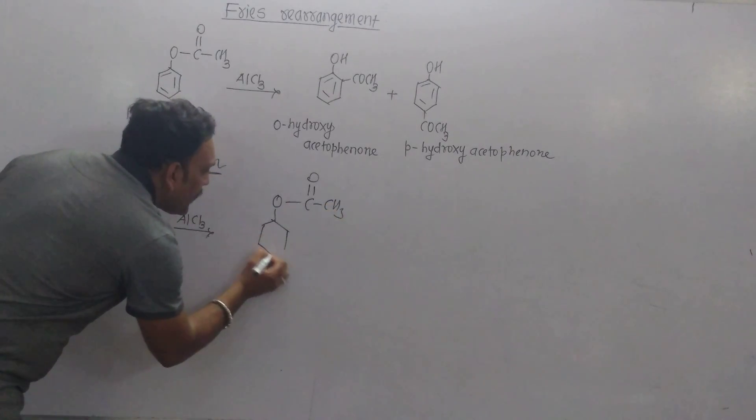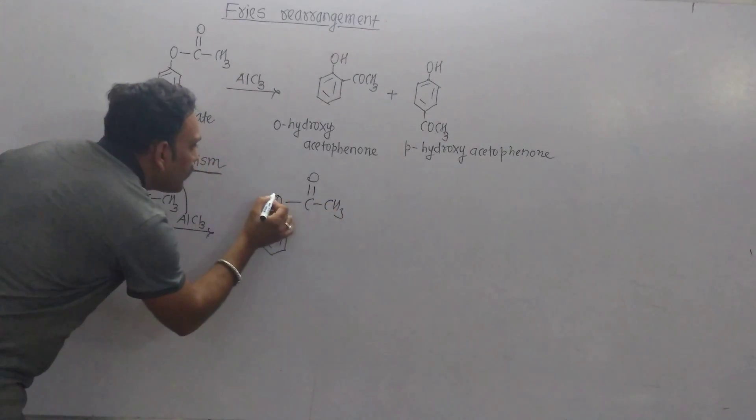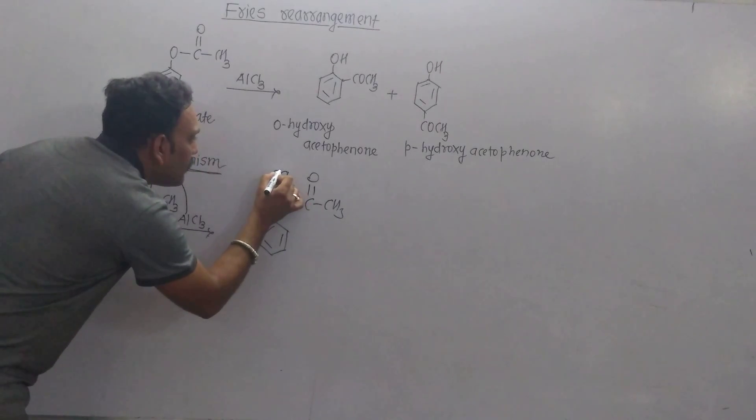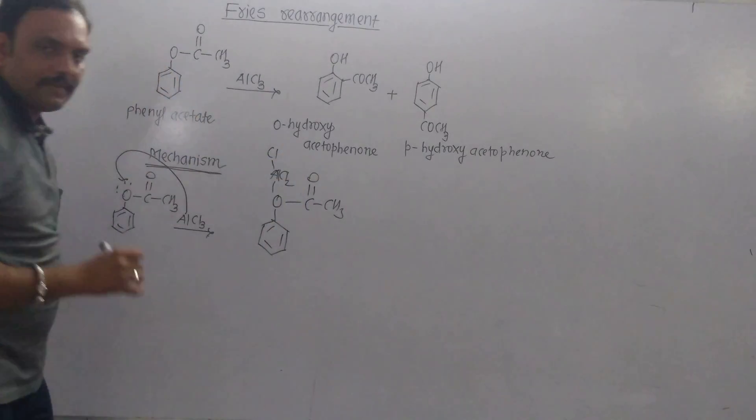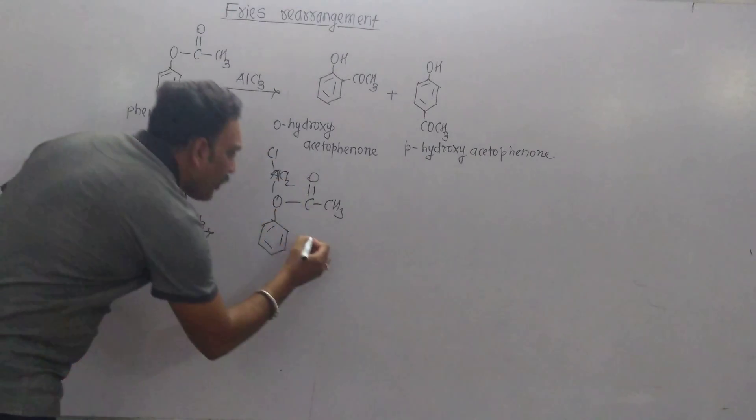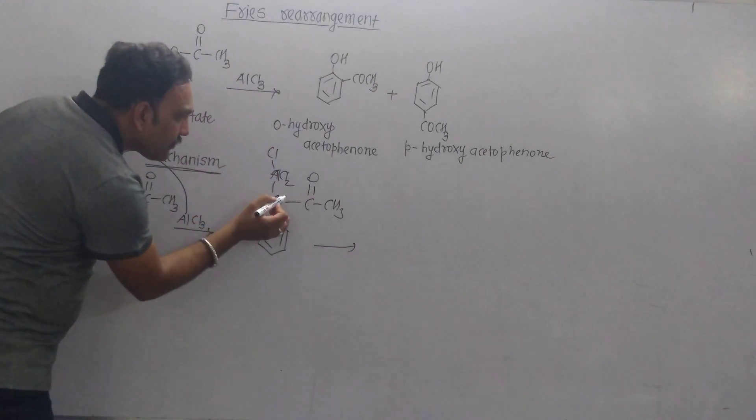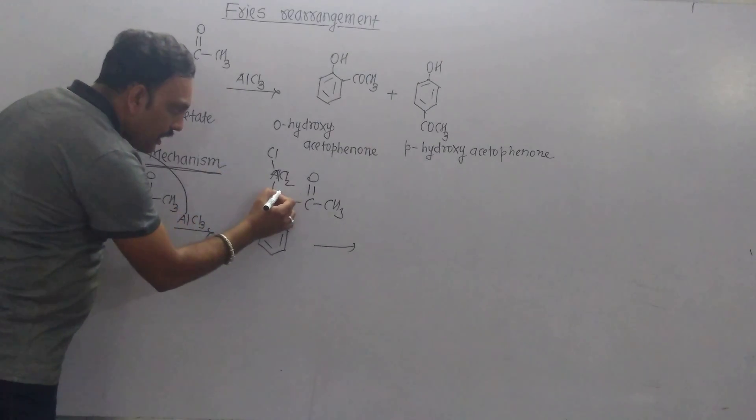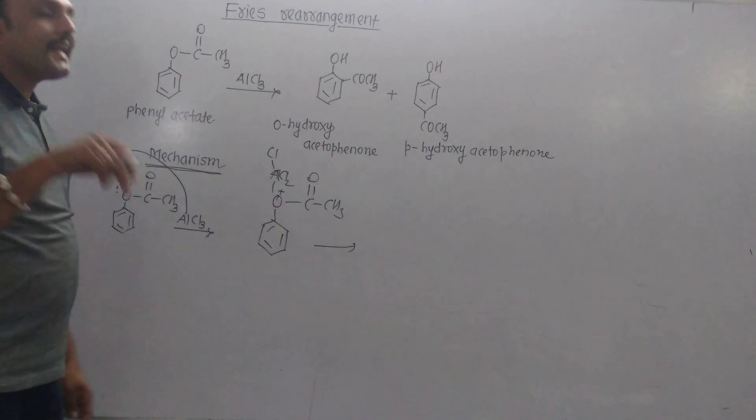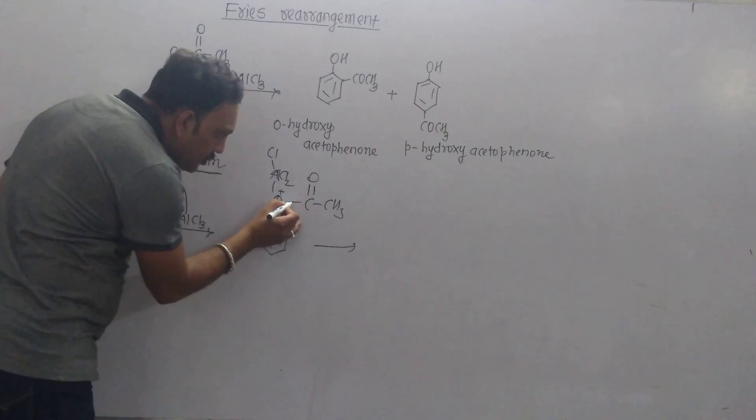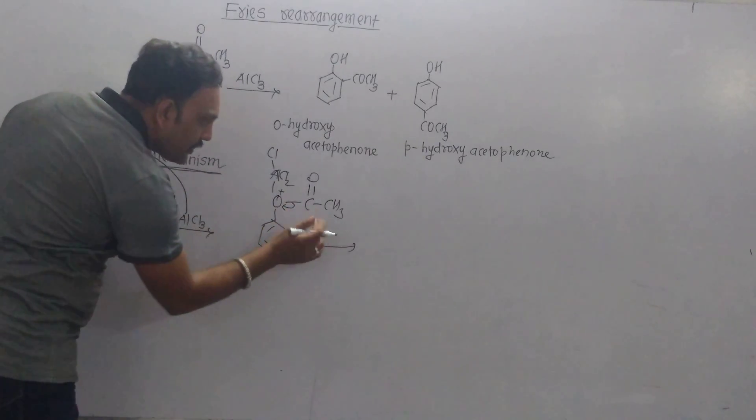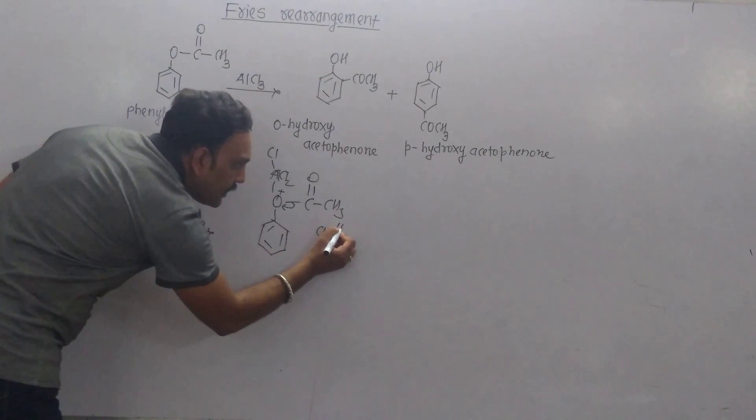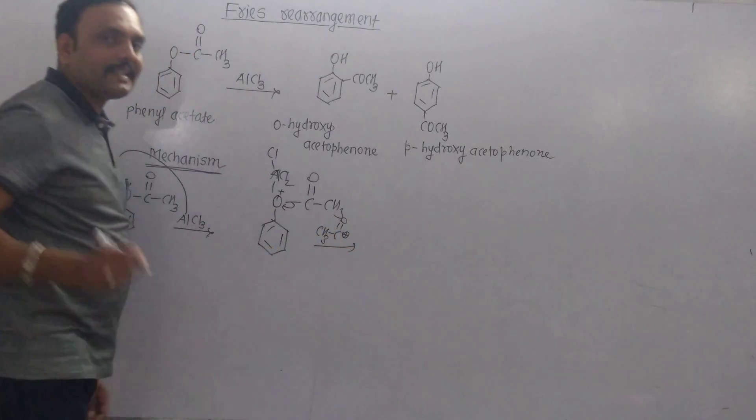AlCl3 attaches itself in this way. From this point, chlorine with its electron pair gets removed in the form of a chloride ion, so it bears a positive charge. Being electronegative, oxygen holds the pair of electrons, due to which the acetylium ion departs.